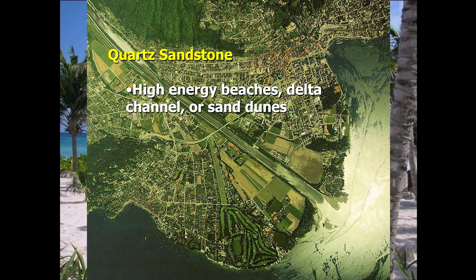Quartz sandstone can also be found in the channel of a delta — a landform that forms when a fast-moving river moves into a slower-moving body of water. As the river hits the slower-moving water, it dumps its bigger sediment immediately, and the really fine-grained stuff gets carried further away. In the channel, where water is still moving fast, you get quartz sandstone; in the bay of the delta, where water moves much more slowly, you won't find it.